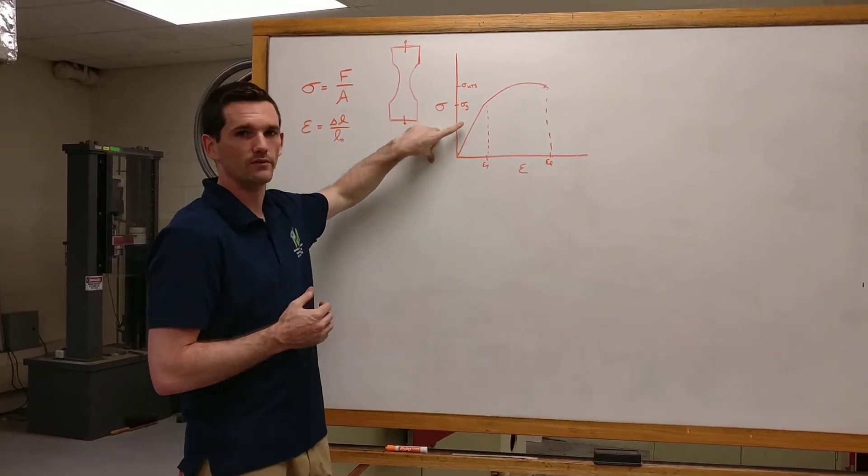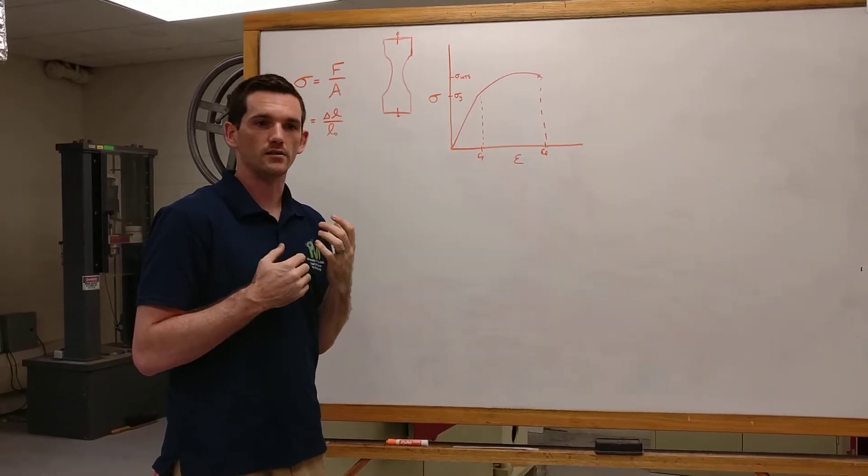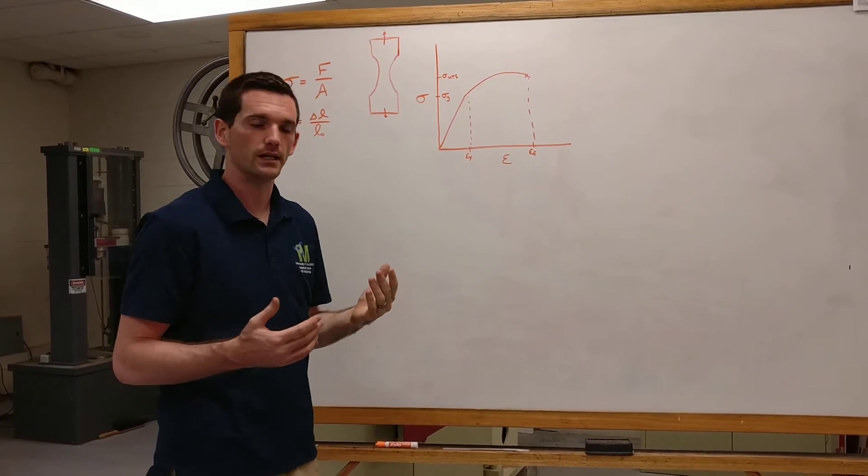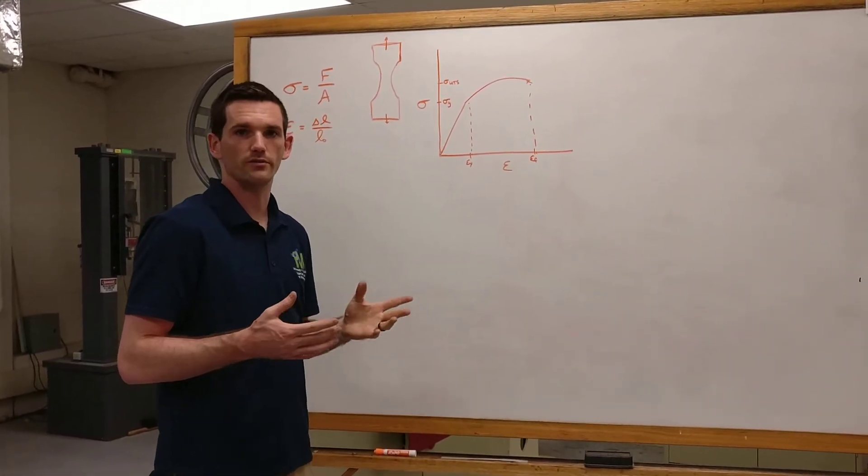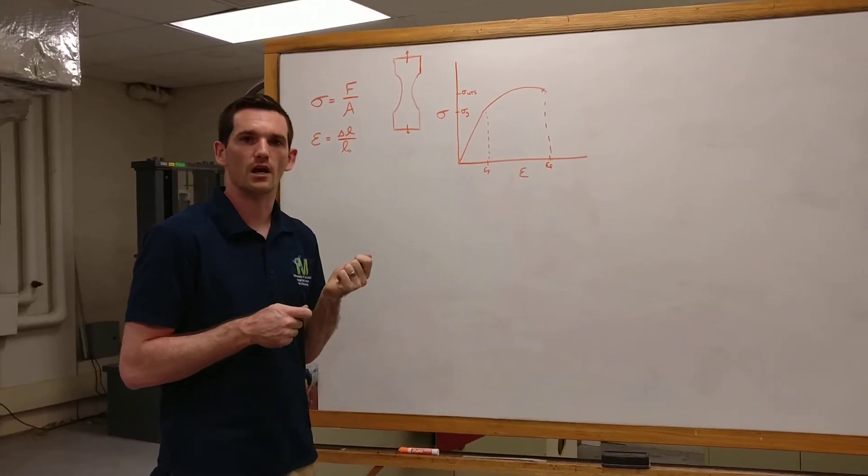In the beginning, we have this linear portion. This is actually measuring sort of the strength of those atomic bonds and is inherent for the material itself. We call it the stiffness. We can take the slope of this portion. We call it the Young's modulus or the stiffness modulus. And it will be the measure of those atomic bonds.